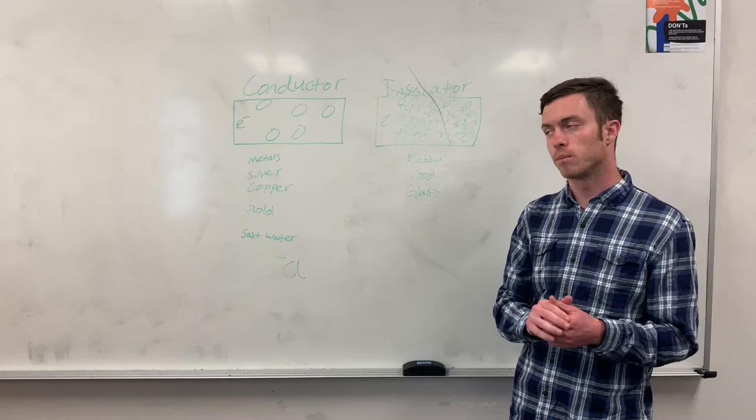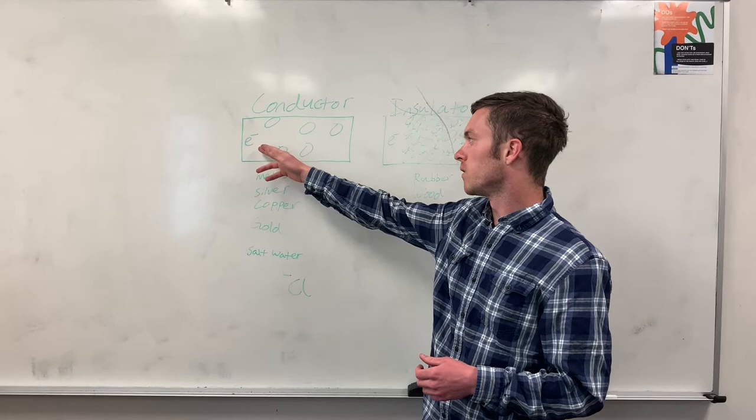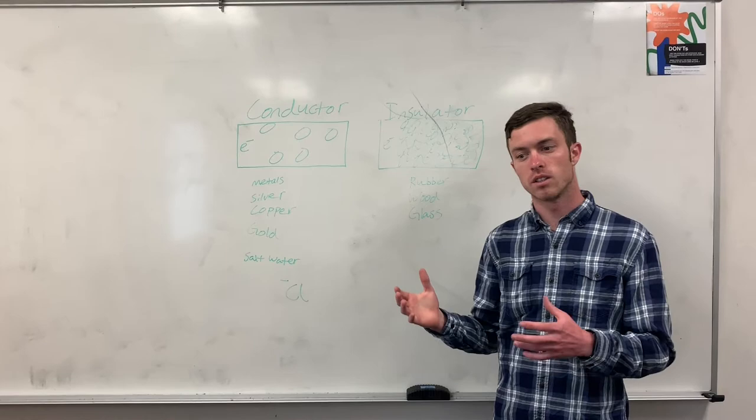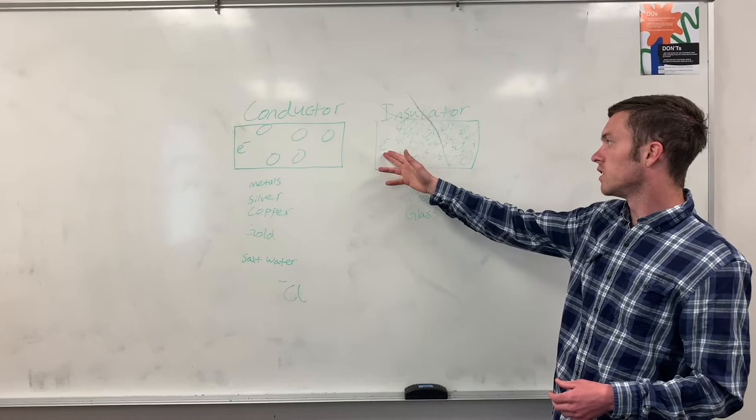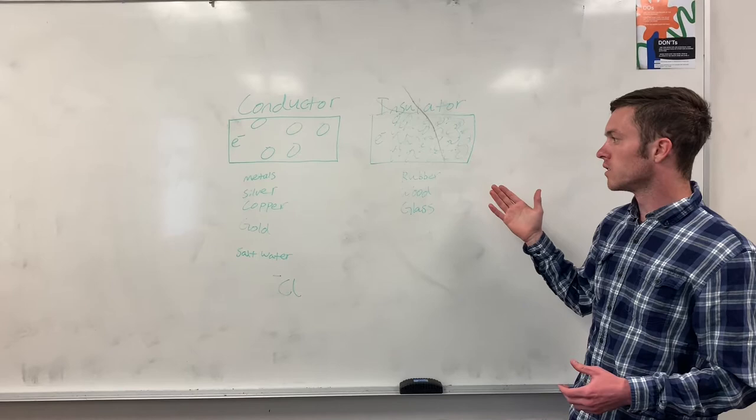If we look at a conductor here, we can see that this electron can, for the most part, flow through this material and get to the other side and allow the flow of a charge. Versus an insulator, this electron really has a hard time getting to the other side. And this is because of the elements that are used to make a conductor versus an insulator.